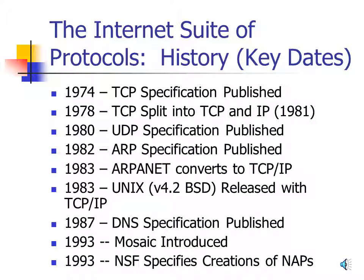Some key dates in internet history: In 1974, the original specification for TCP was published. At that point there was no IP — all functions of TCP and IP were combined into a single specification. In 1978, TCP was split into the two protocols we know today: TCP and IP. In 1981, the final IP specification was published. In 1980, the UDP specification was published, and in 1982 the ARP specification was published. By the early 1980s, most key protocol specifications had been developed.